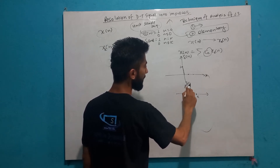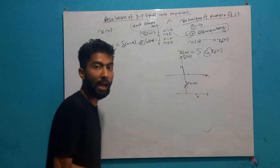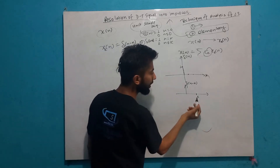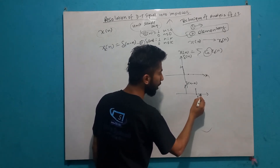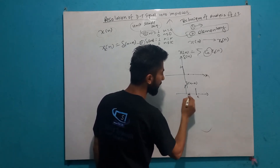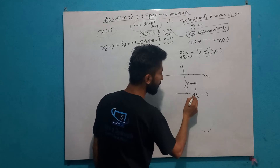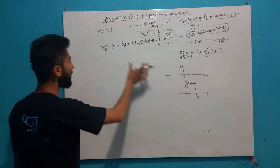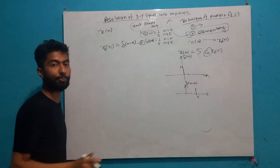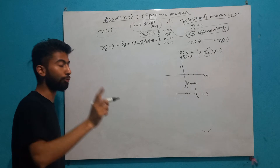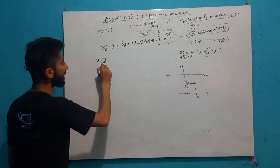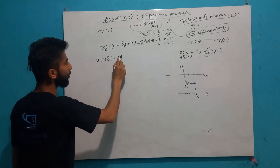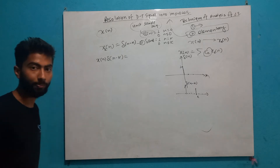Del[n-k] — what is the delay back? It is a right shift. What is the unit? There is 1 at position k, and 0 elsewhere. Now I will multiply these signals. What is x[n]·del[n-k]?